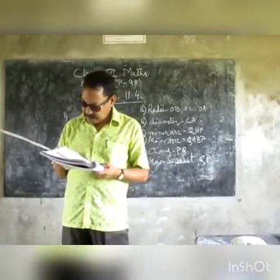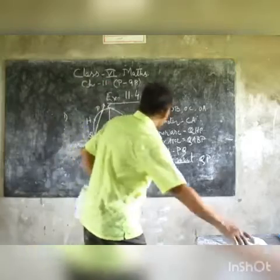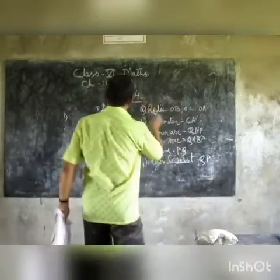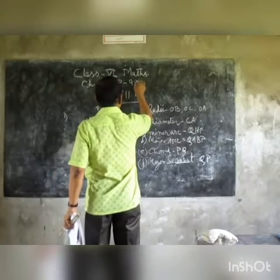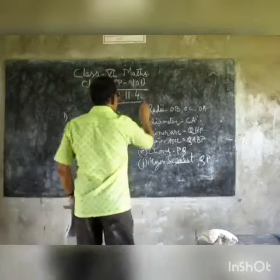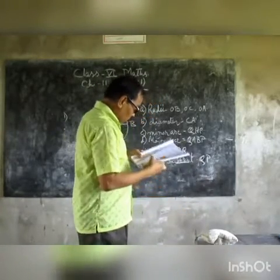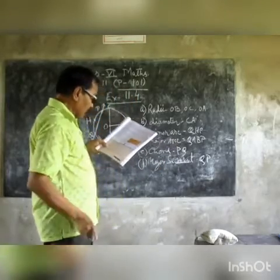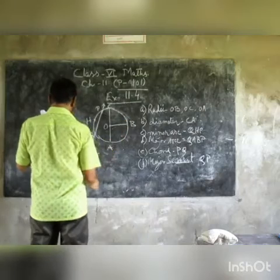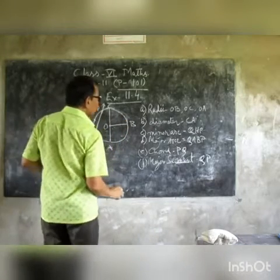Now see, page number 101, chapter exercise 114, question number 1. From the given figure, name the following. The figure is given in the book and you have to find out the following.